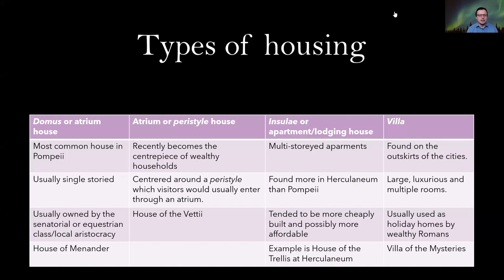When looking at these different types of housing, we're looking at the different ways they're constructed, their purpose, but mainly what social class is using them — because this is often the distinction between why these houses are built. If we look at the domus or atrium house, this is the most common house in Pompeii.